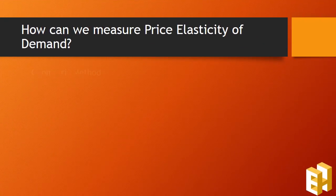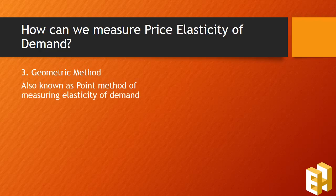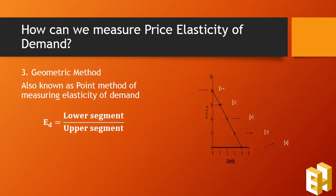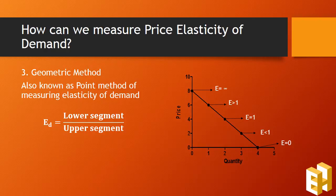Lastly, we have the geometric method, also known as the point method of measuring elasticity of demand. It is calculated as the ratio of the lower segment to the upper segment. Diagrammatically, the point on the x-axis shows elasticity equals 0, and on the y-axis it implies elasticity equals infinity. The midpoint on the curve implies elasticity equals 1.